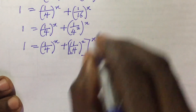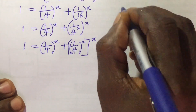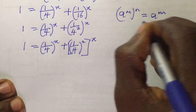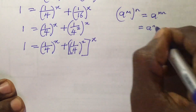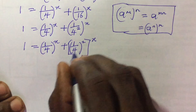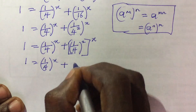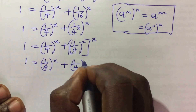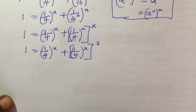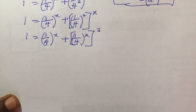Now recall that if we have a to the power of m, in brackets, to the power of n, this is simply a to the power of m times n, and we can rewrite this as a to the power of n times m. So if we apply this rule then we can rewrite this expression as 1 equal to 1 all over 4, all to the power of x, plus 1 all over 4, all to the power of 2x.